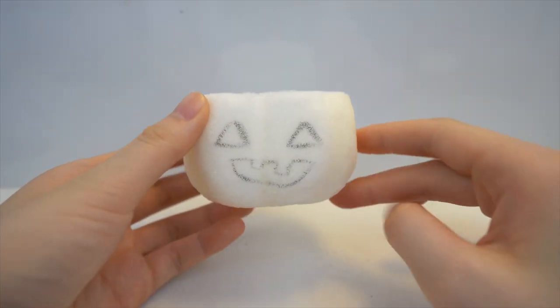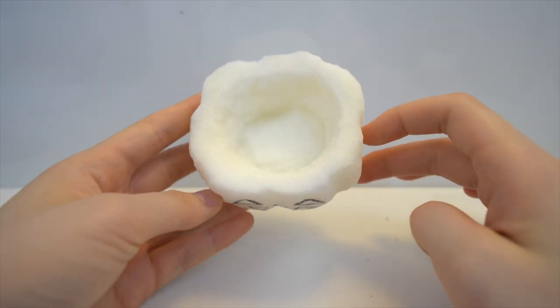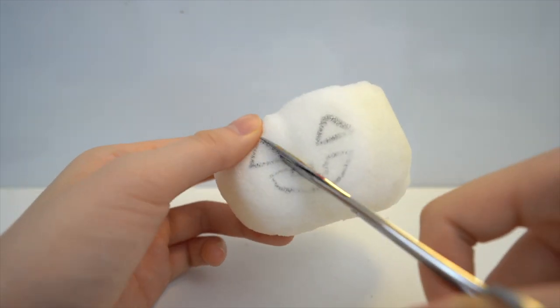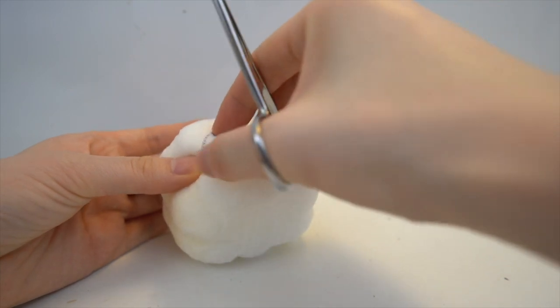This is the part where you can get creative. You can draw whatever type of face or design you want. I just drew the common jack-o'-lantern triangle eye face. Then you can go ahead and cut out those pieces.